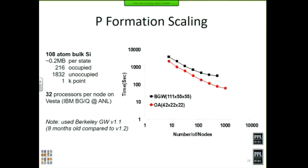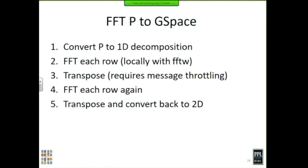For the later parts of the algorithm, we have those completed as well. The P formation is by far the largest part of the computation. For the 128-node run, we were taking about 20 seconds for setup — reading in all the states, FFTing them to real space, and duplicating states across node-level caches — then about 800 seconds to actually form P, and the rest of the computation following that took about two total seconds. So P is by far the largest bottleneck.